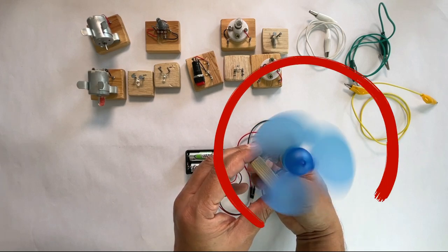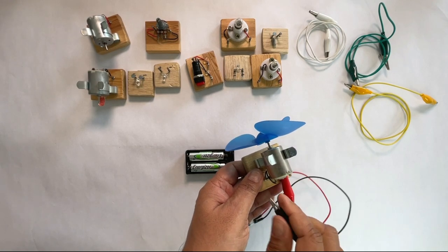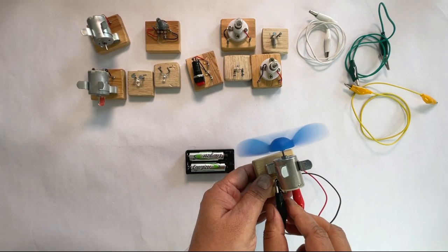This is a very interesting property of a DC motor. Simply by changing the polarity, we can change the direction of rotation, clockwise or counterclockwise.